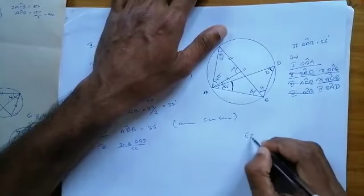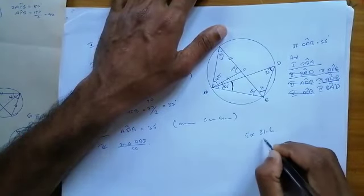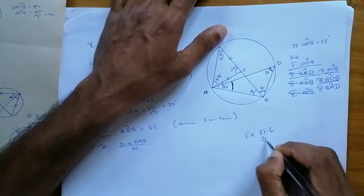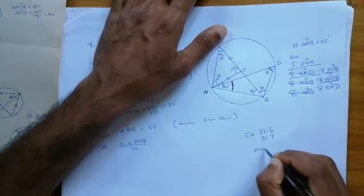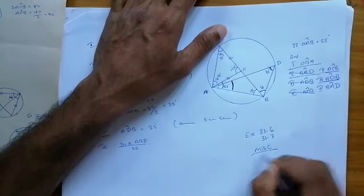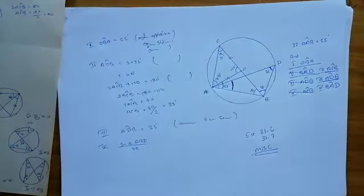Exercise 31.6, 31.7, and the Miscellaneous — all the exercises you can do.